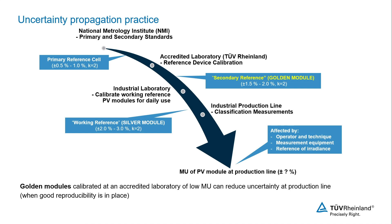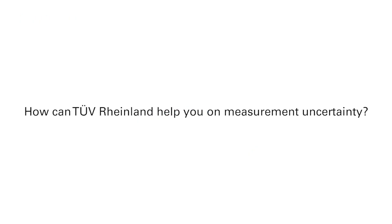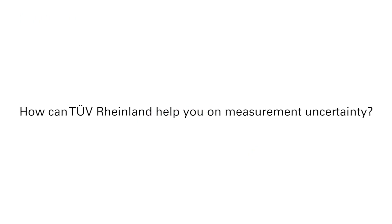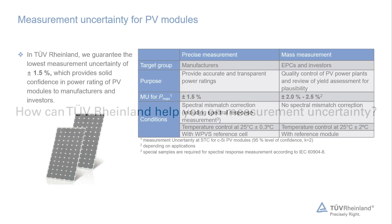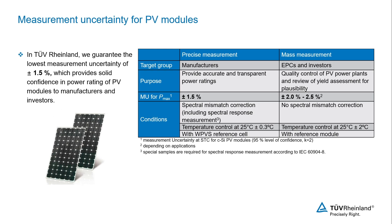It's very important to stress that the total measurement uncertainty of PV modules in production will depend on the quality of employed procedures in every step of this chain. TÜV Rheinland can provide manufacturers low measurement uncertainty for the reference or golden modules, with measurement uncertainty of 1.5 to 2%. This enables manufacturers to achieve low measurement uncertainty for PV modules.